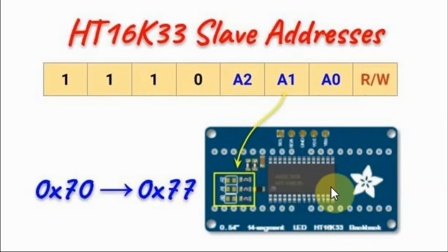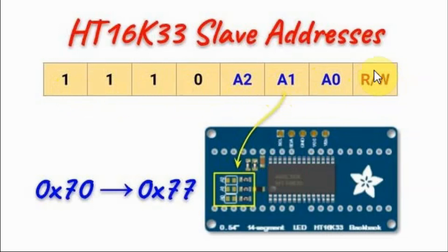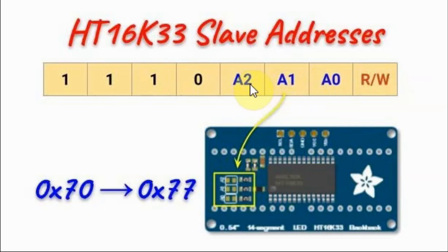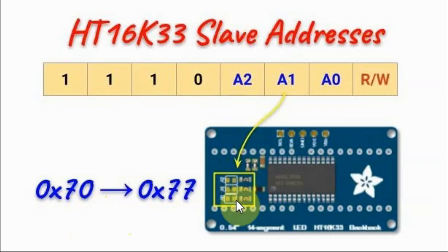As mentioned, we can connect up to eight HT16K33 modules to a microcontroller using the 7-bit slave address. The least significant bit determines read or write. The three address bits A0, A1, and A2 give eight different addresses. By default these lines are open, so the address is 0x70. By soldering these lines we can get addresses all the way up to 0x77.